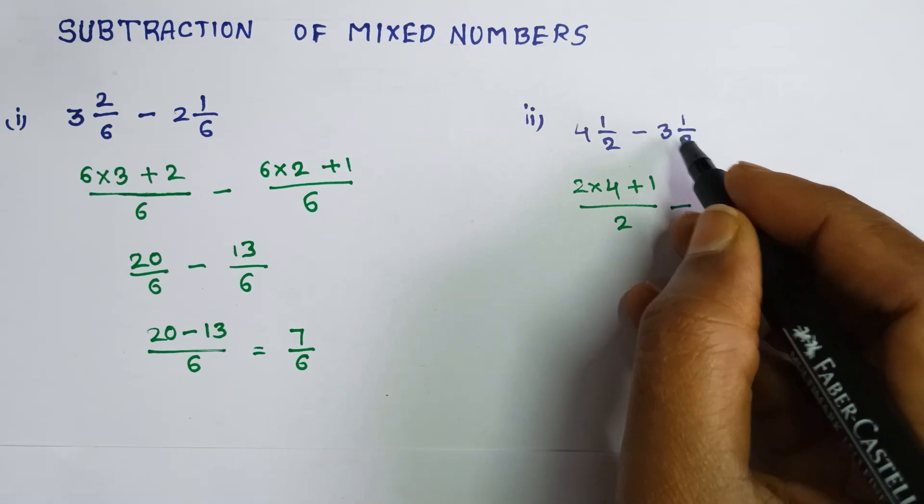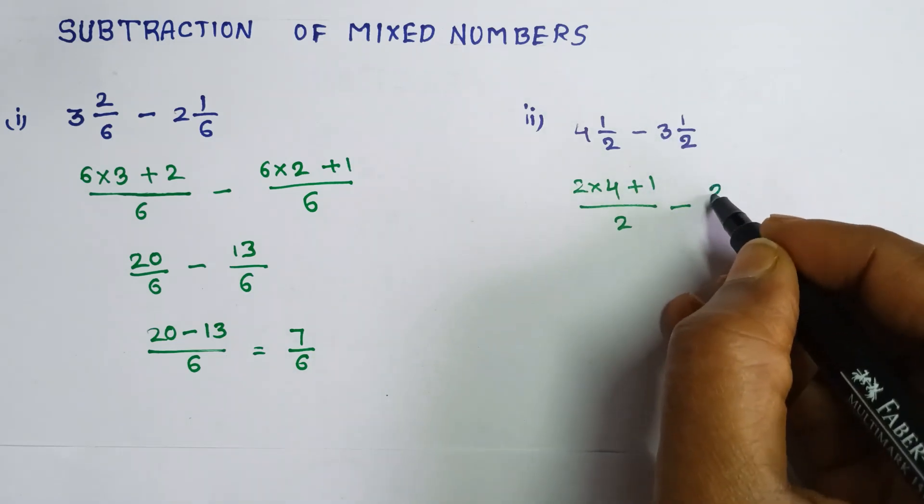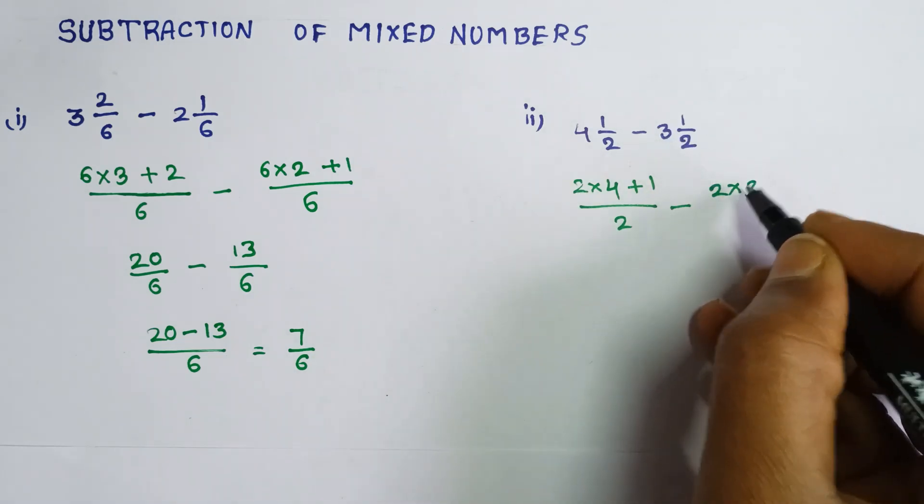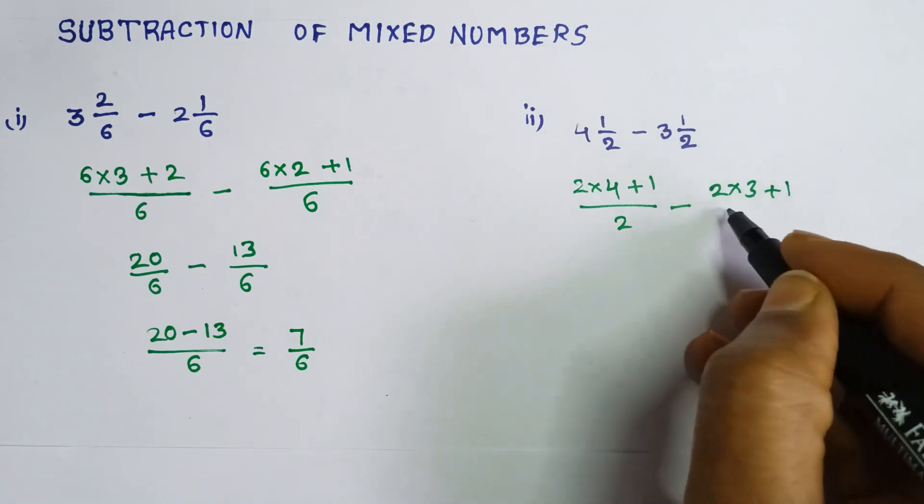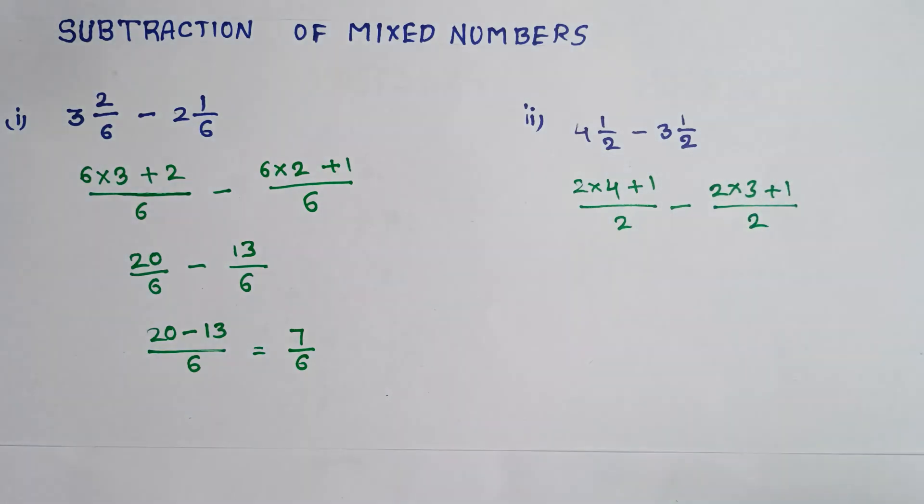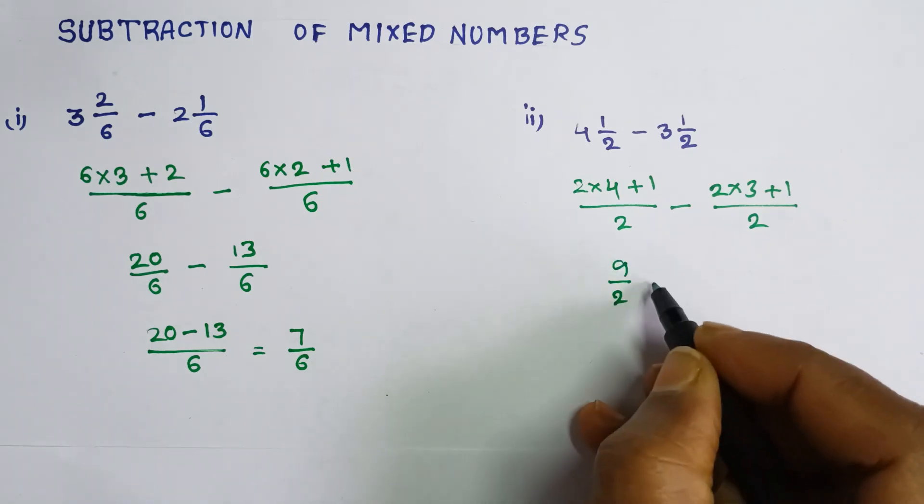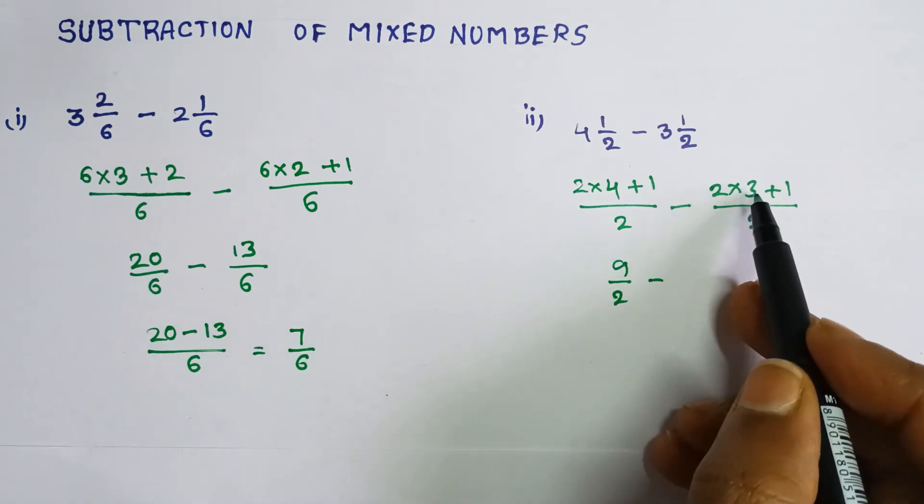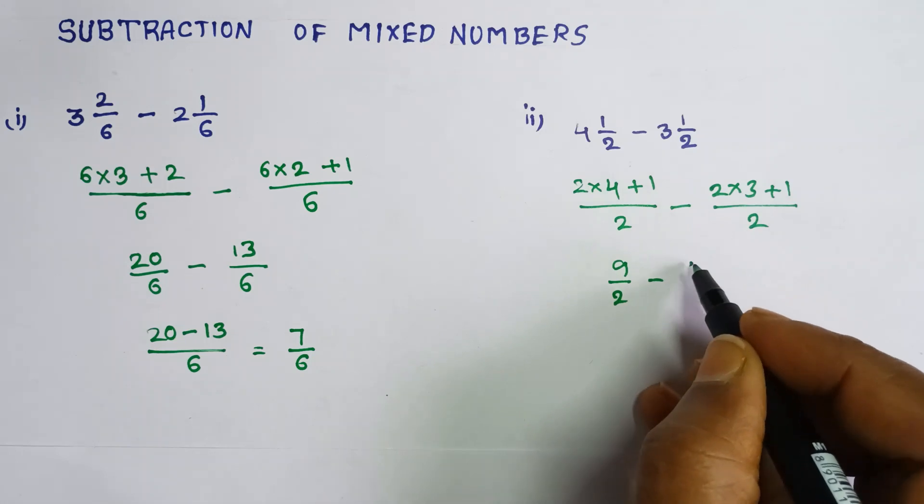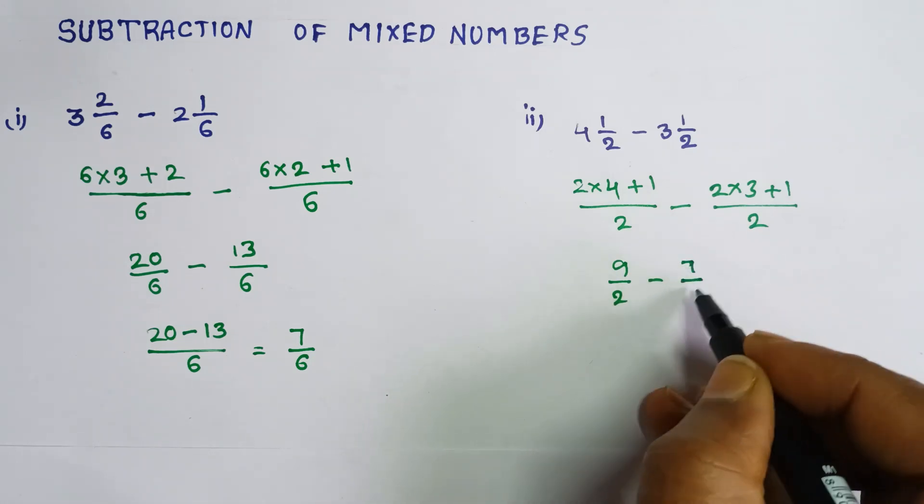Minus 2 into 3 plus 1 by 2. 4 times 2 is 8 plus 1 is 9 by 2, minus 2 times 3 is 6 plus 1, 7 by 2.